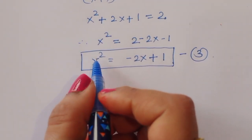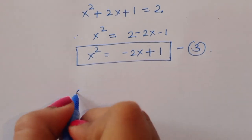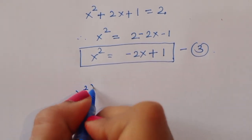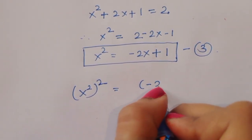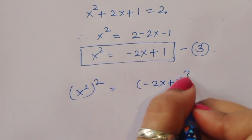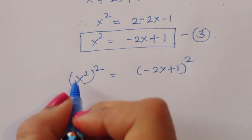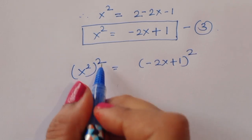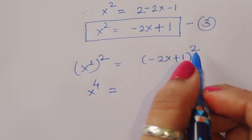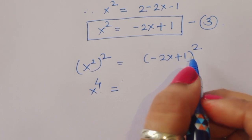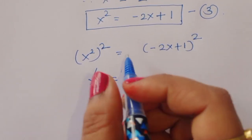Now, from x² = 1 - 2x, we take the square of both sides: (x²)² = (1 - 2x)², giving x⁴ = (1 - 2x)².